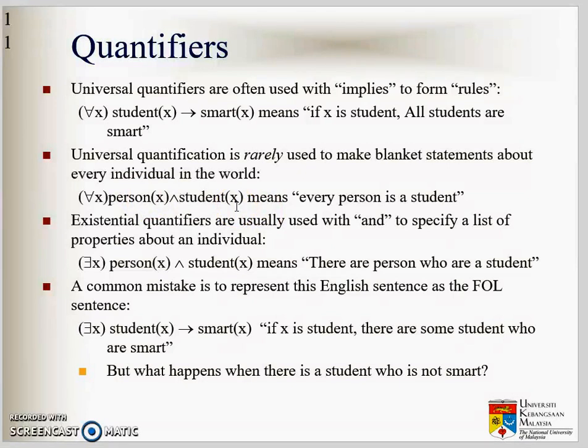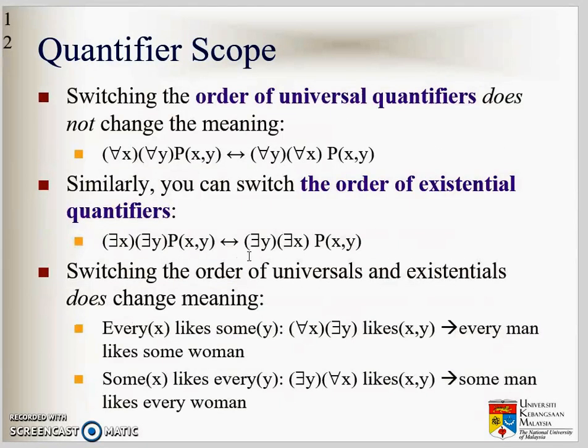Existential quantifier is usually used with AND to specify a list of properties about an individual. Existential is usually used as a statement, not an implies. That's how to use the existential and universal. Some X where X is a person and X is a student. There are some person who are student.